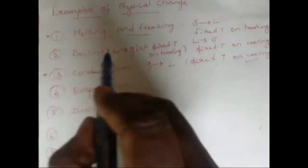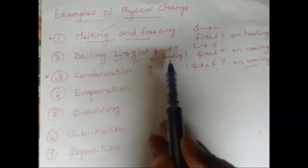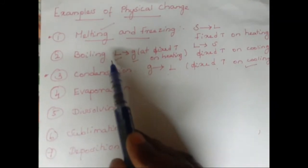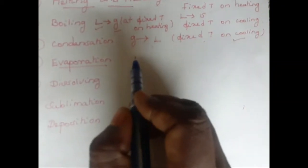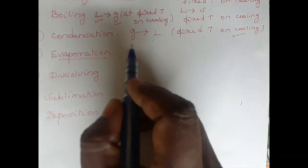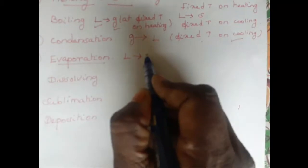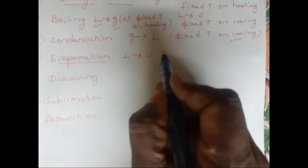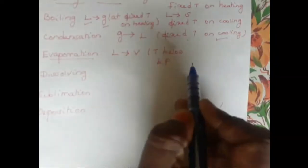Let me say the definition once again: the process during which liquid changes into gas at fixed temperature on heating is called as boiling. Now let us see evaporation. The process during which liquid changes into vapour at a temperature below the boiling point is called evaporation.